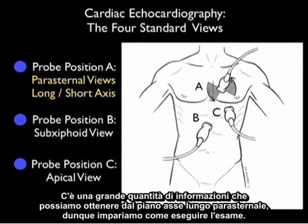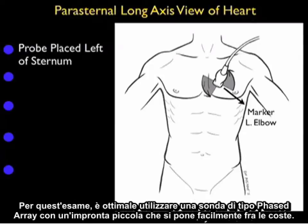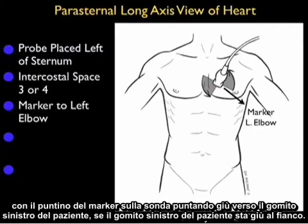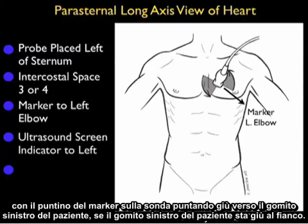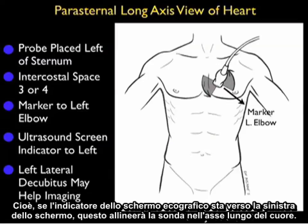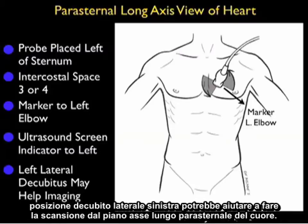There's a great deal of information we can get from the parasternal long axis plane, so let's learn how to perform the examination. It's optimal to use a small footprint phased-array type probe that can easily sit between the ribs. We're going to place the probe just left of the sternum at about intercostal space three or four, with the marker dot on the probe aimed down towards the patient's left elbow, with the caveat that the ultrasound screen indicator would be over towards the left of the screen. This will align the probe in the long axis of the heart. Occasionally it can be somewhat difficult to get a good view, and moving the patient into the left lateral decubitus position can sometimes help imaging from the parasternal long axis plane of the heart.